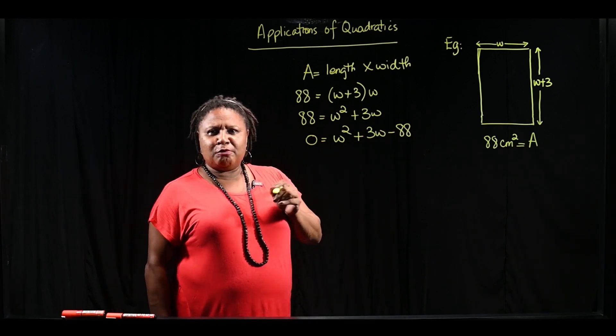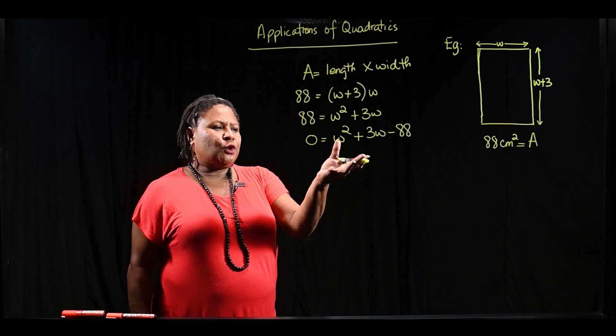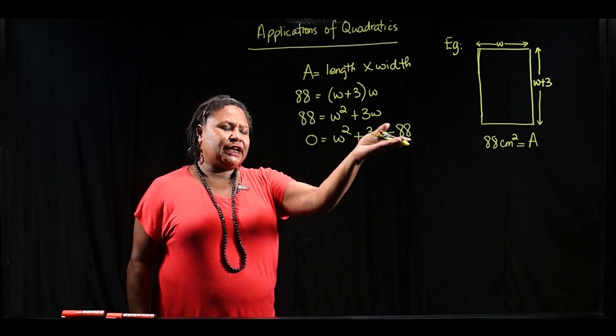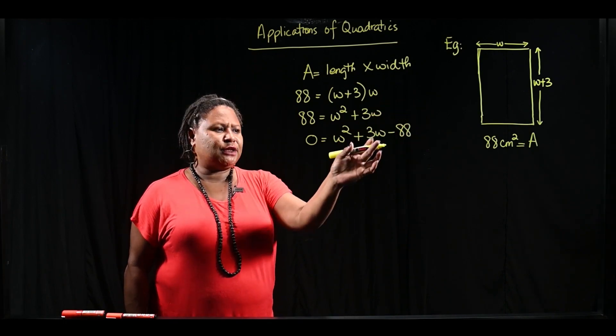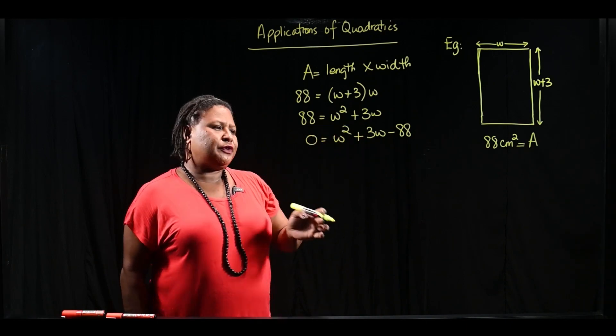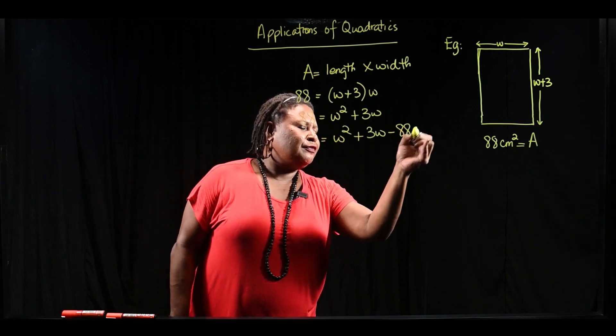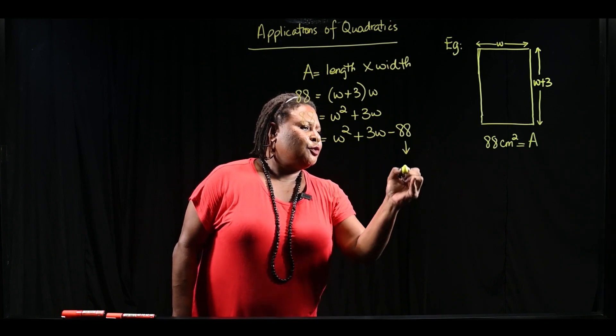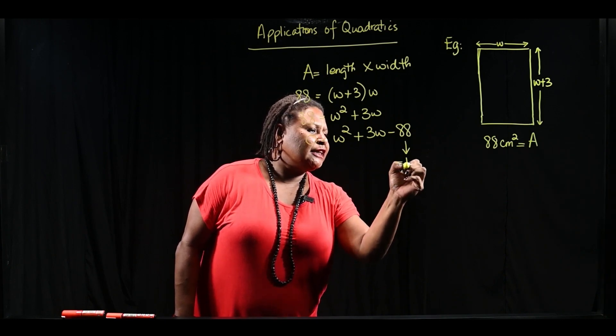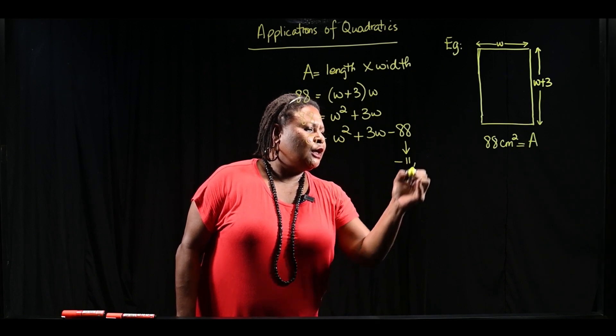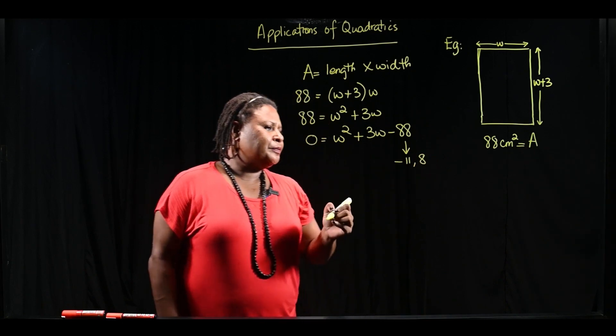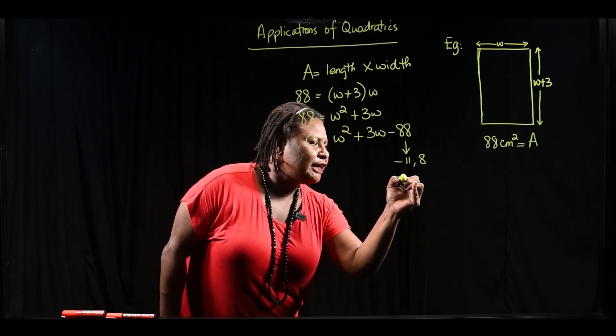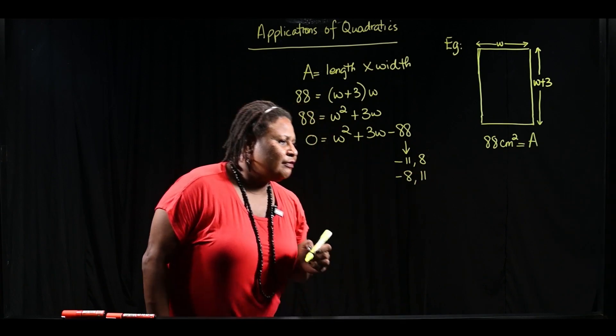Now we are getting somewhere. So let's look at the third term. We need to find the factors of the third term that will give us a sum of positive 3. What are the factors of negative 88? We have negative 11 and positive 8, and we also have negative 8 and positive 11.